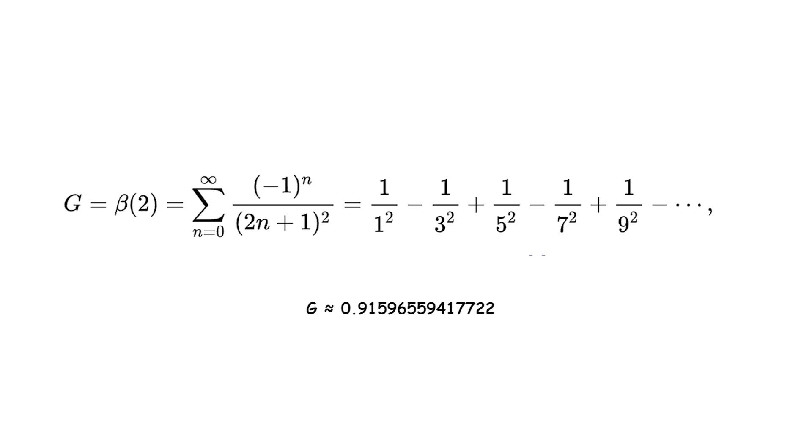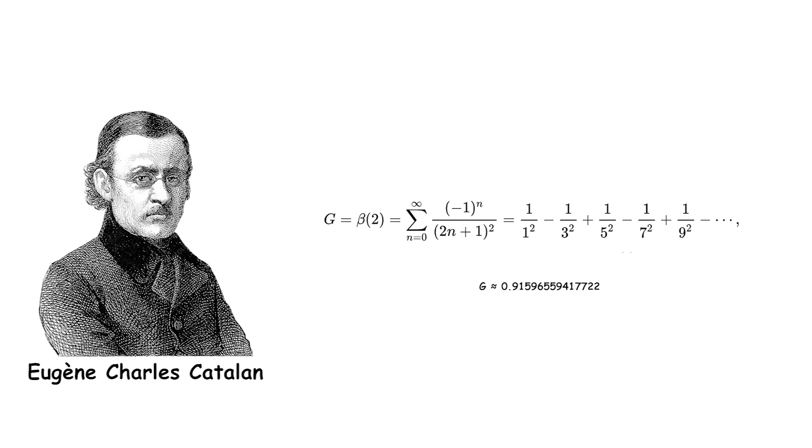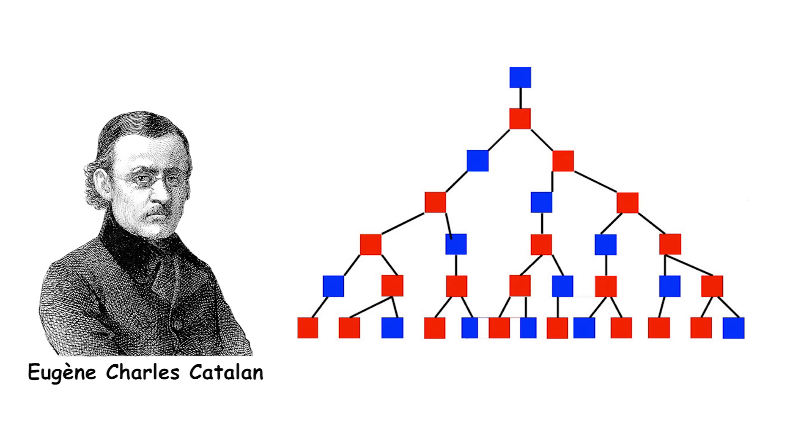Catalan's constant is a well-known mathematical constant that is defined by an infinite series. It is named after the Belgian mathematician Eugène Charles Catalan, who first gave an equivalent series and expressions in terms of integrals for this constant.